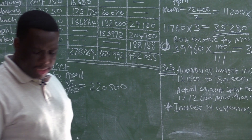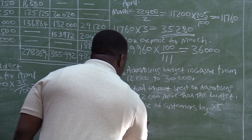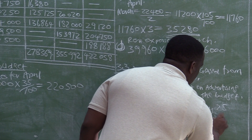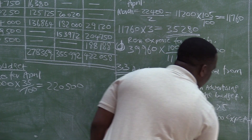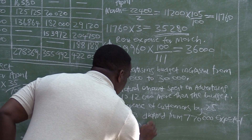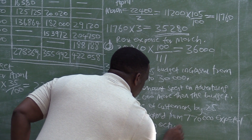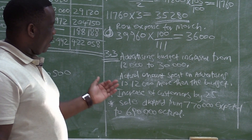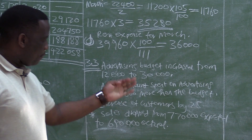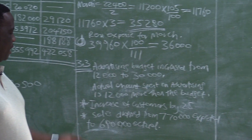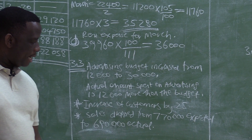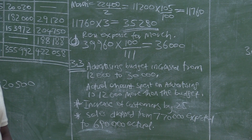The second effect concerns sales — but sales dropped. Even though customers increased, sales dropped from $770,000 expected to $690,000 actual. So the business spent a lot on advertising: the number of customers increased, but sales dropped from $770,000 expected to $690,000 actual.